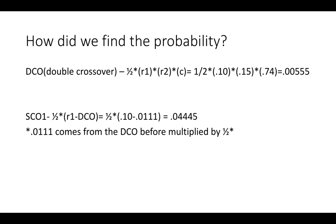Now let's find our SCO1 probability, which is 1/2 times r1 minus DCO. But the DCO we will use will be before we multiply by 1/2. So when we fill in our numbers, we get 0.04445.